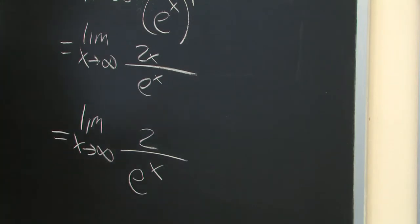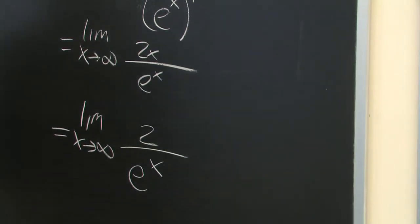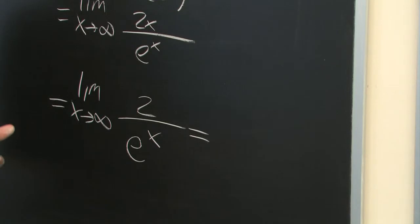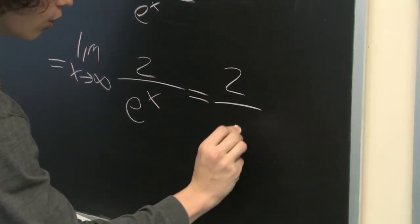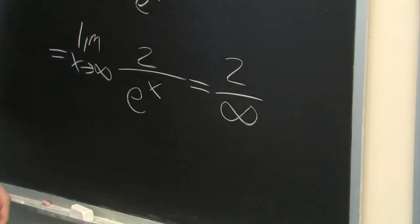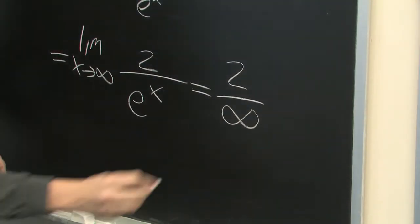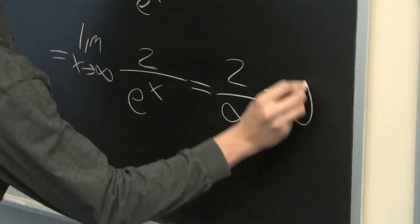Well, here if we plug in infinity, which is not exactly the most rigorous way of thinking about it, but it will serve our purposes, we get 2 over infinity. But, any time we are dividing by infinity, we get 0.